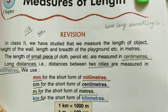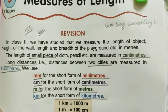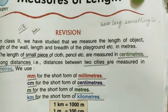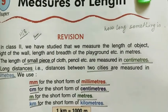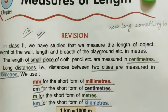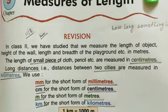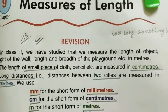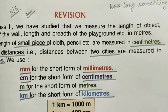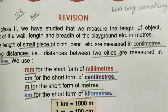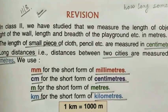Basically, the meaning of measurement of length is to measure how long an object is. It may be a wall, it may be your book, it may be your pencil box — it may be anything.